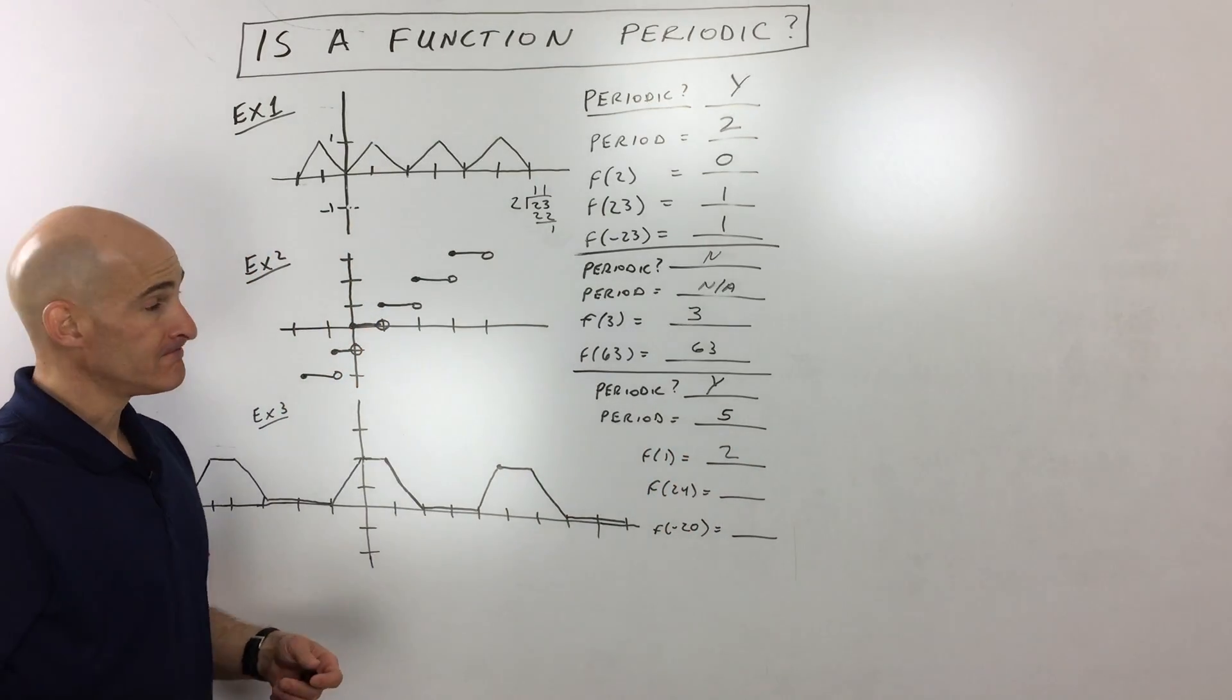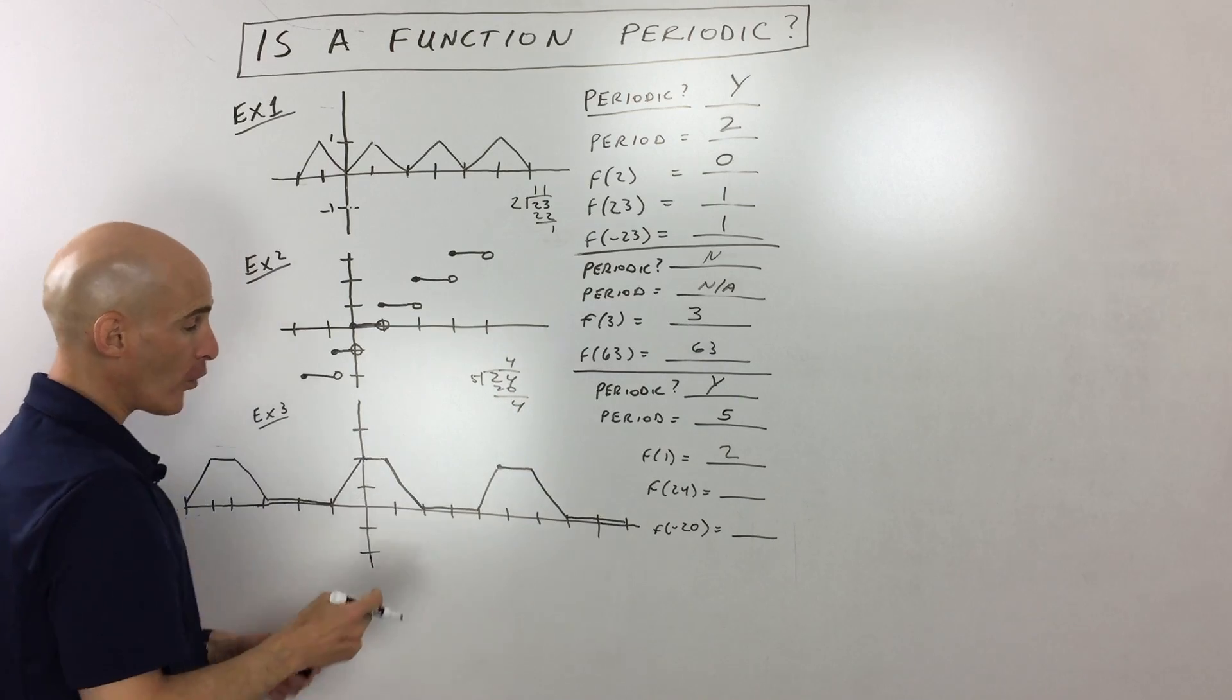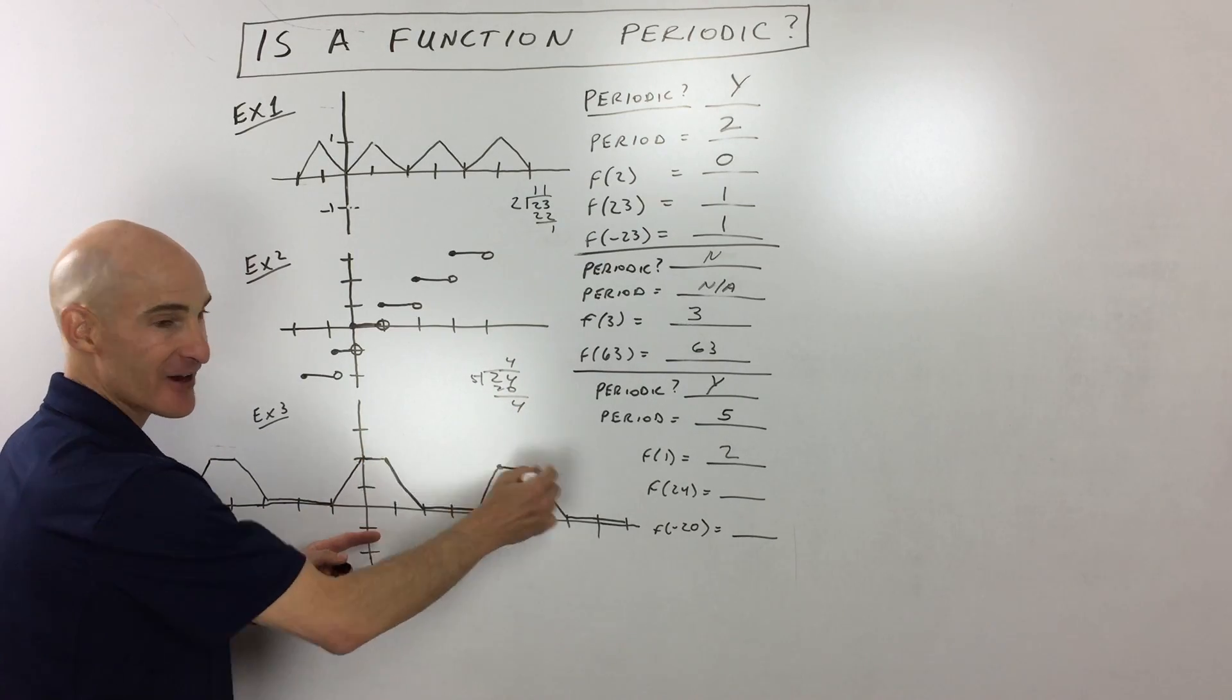F of 24. Hmm. Well, we know it repeats every five. So let's see how many times does five go into 24? Well, we know four times, right? Remainder four.